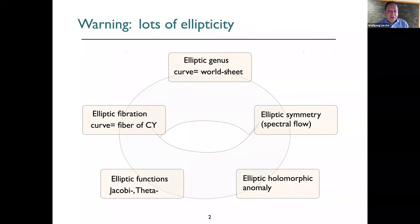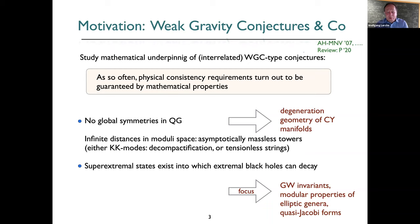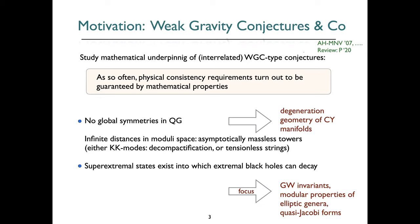There's 'elliptic genus', which refers to the world sheet, and 'elliptic fibration', where 'elliptic' refers to the fiber of a Calabi-Yau manifold. The motivation was the gravity conjectures. Physical consistency requirements — traditionally things like anomaly cancellation — turn out to be guaranteed by mathematical or geometric properties of manifolds. The idea was to look at compactifications on non-trivial manifolds to see how they are compatible with various weak gravity conjectures.